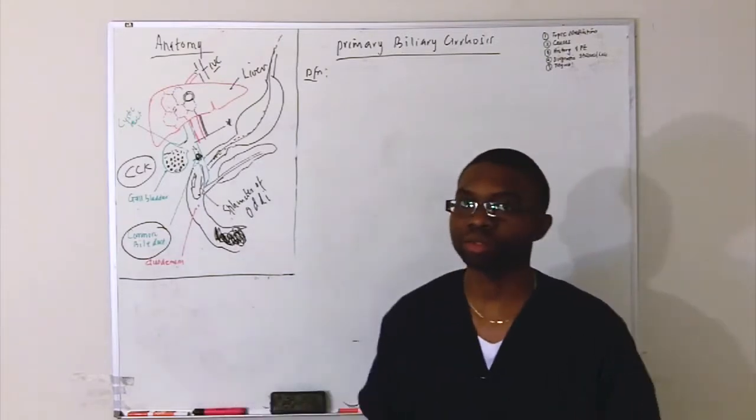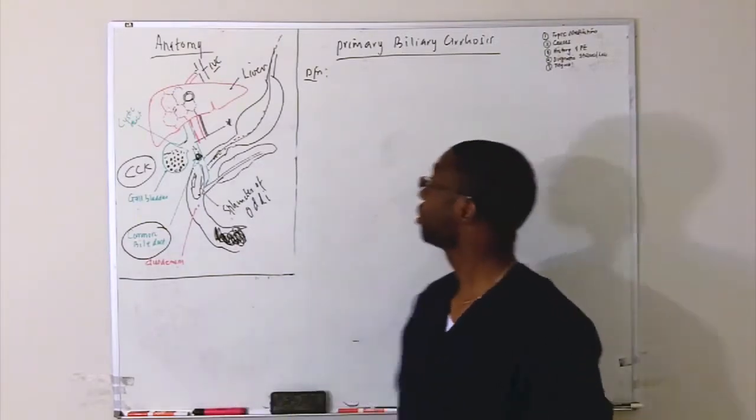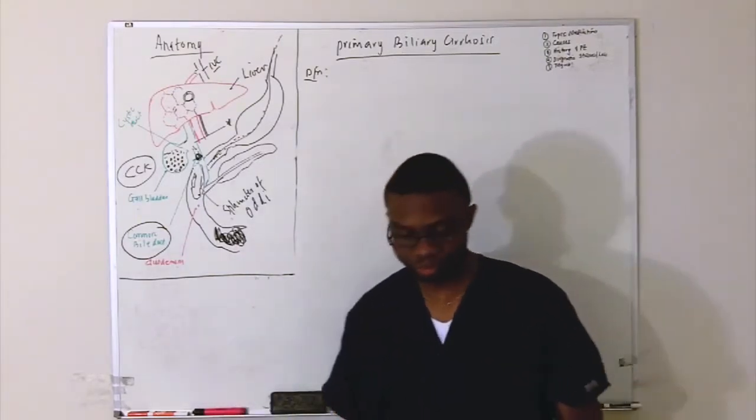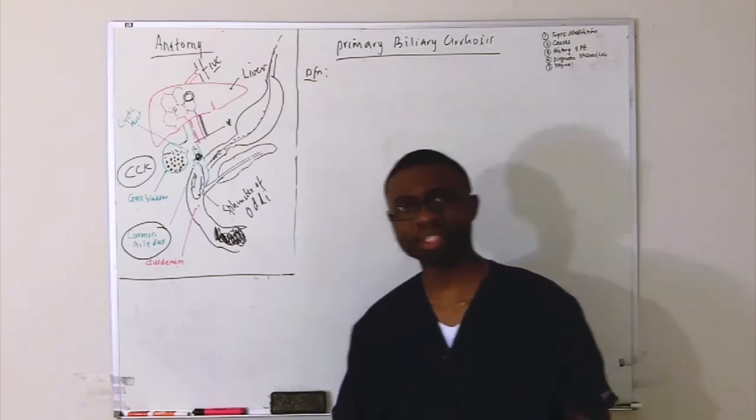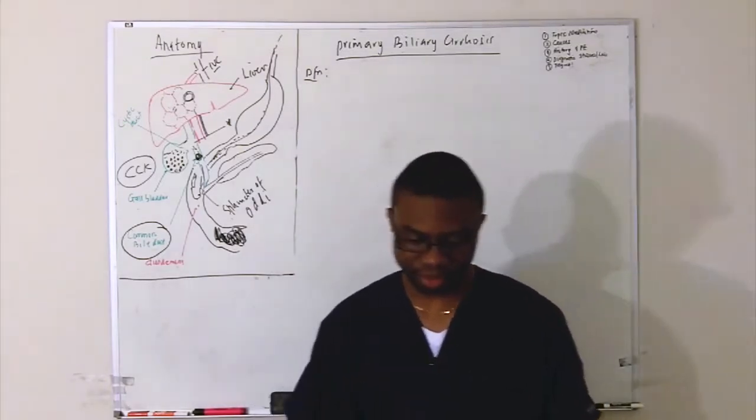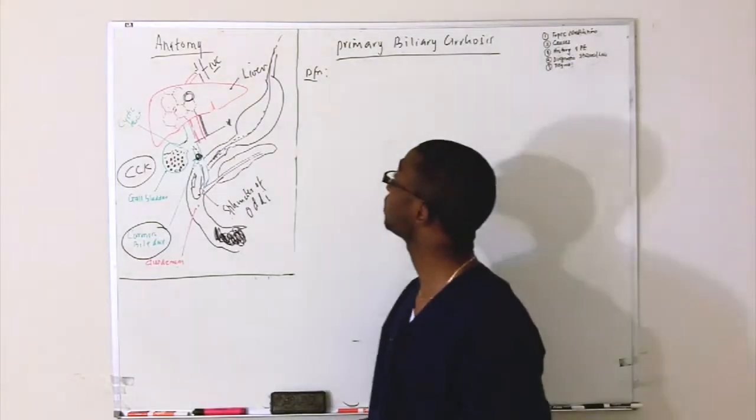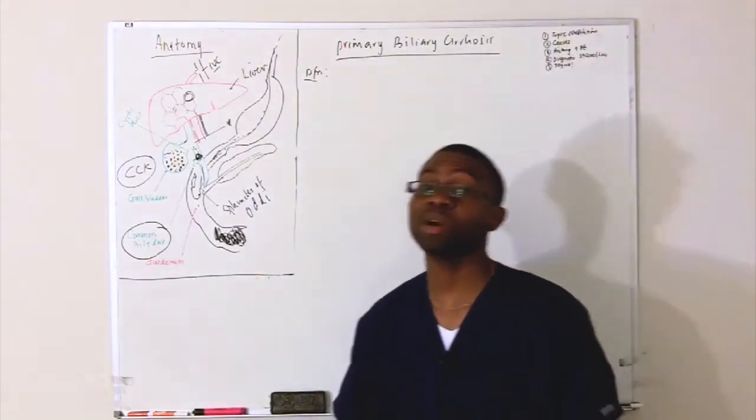The next topic we're going to be talking about today is primary biliary cirrhosis. This is a chronic progressive cholestatic liver disease that's actually caused by autoimmune.